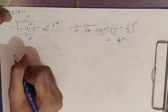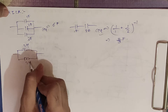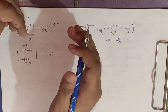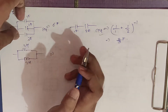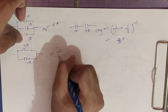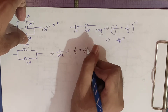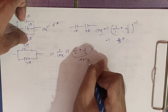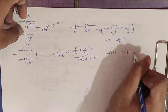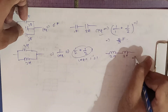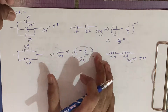For inductance in parallel, use the same formula as resistance in parallel: 1/L_eq equals 1/2 plus 1/2, giving L_eq equals 1 henry. For inductance in series, simply add the values — 2 henry plus 3 henry equals 5 henry. These are the basic rules you need to know.